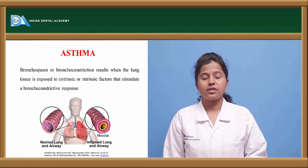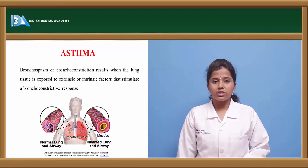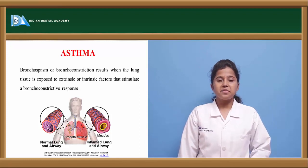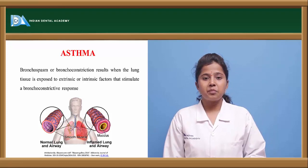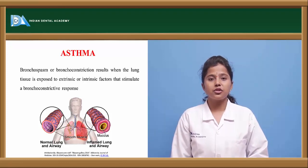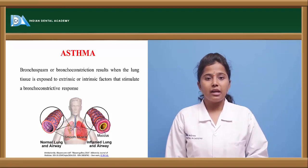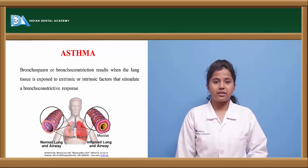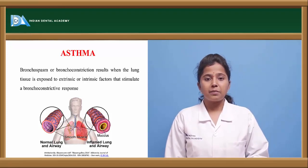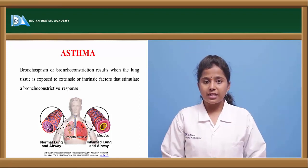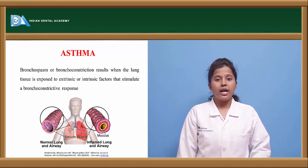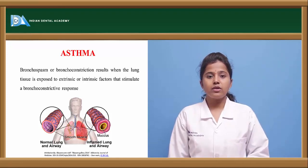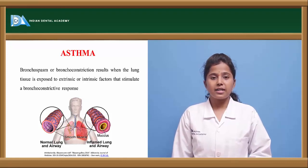When or where does bronchoconstriction take place? Bronchoconstriction usually occurs in a disease condition called asthma. Asthma is a pulmonary disorder which causes bronchoconstriction or bronchospasm when the lung tissue or bronchial muscle is exposed to extrinsic or intrinsic factors like viruses, pyrogens, or allergens. When the lungs are exposed to these factors, it causes constriction of bronchial smooth muscle, thereby asthma occurs.